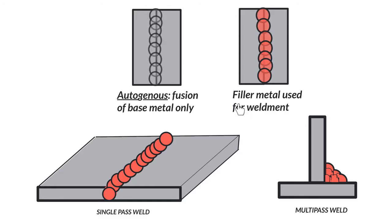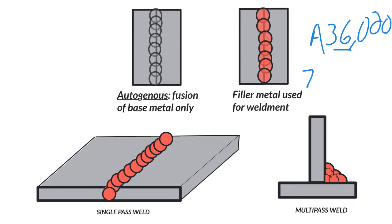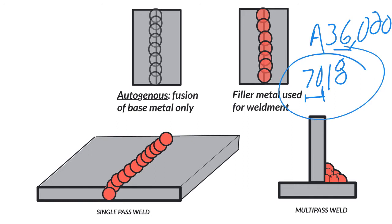Keep in mind that filler metal is what usually makes a weld even stronger or the whole component stronger. Let's say we're using A36 steel — the minimum tensile strength is 36,000 pounds. But if we stick weld it with a 7018, now we're talking about 70,000 pounds tensile strength minimum yield. As long as it's done correctly, that weld is way stronger than the base metal.